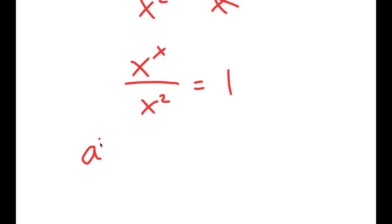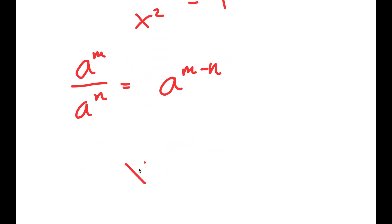Now, if I have something of the form a to the power of m over a to the power of n, this is equal to a to the power of m minus n. So I get x to the power of x minus 2 is equal to 1.